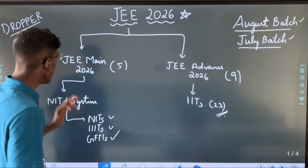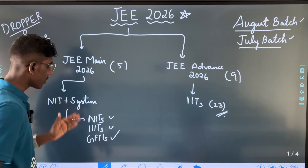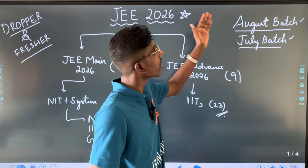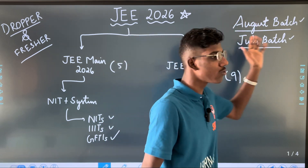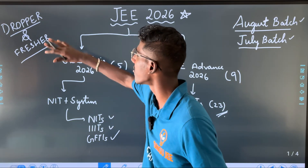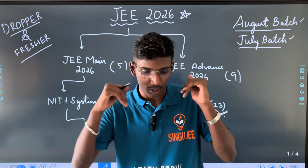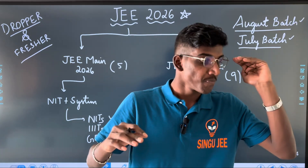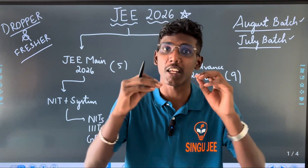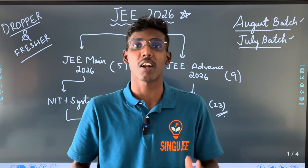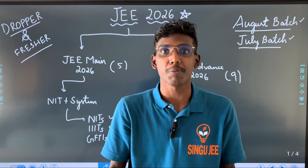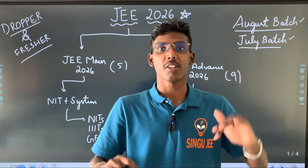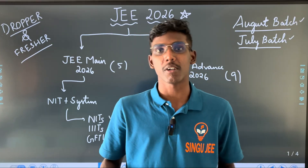Like NIT system — NIT system is for JE maintenance. This is 5 months and 9 months. I will upload August or July. That is a drop and fresh air. Why are you now a student? You are now a 12th fresh student. You have to drop in. You will need to do self-study coaching. You have to go to the mock test. You have to practice. You have to go to the PYQs.